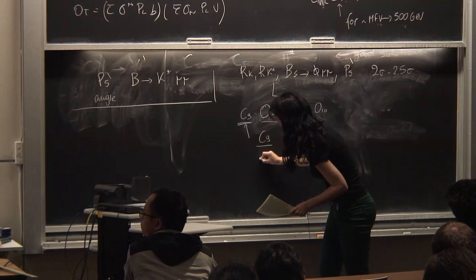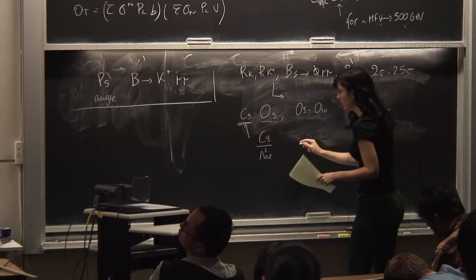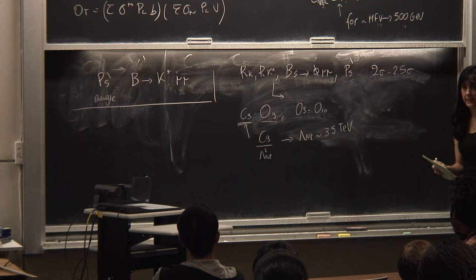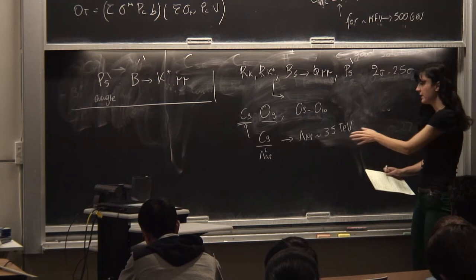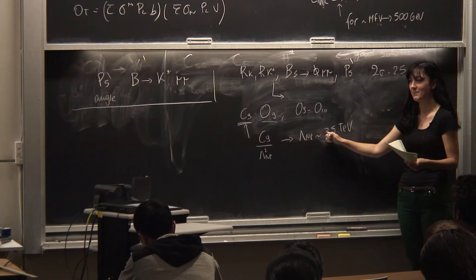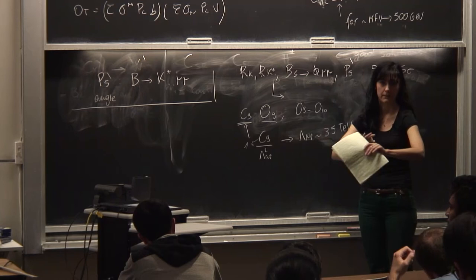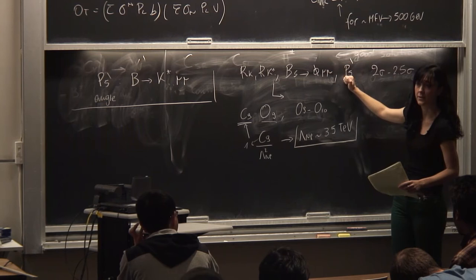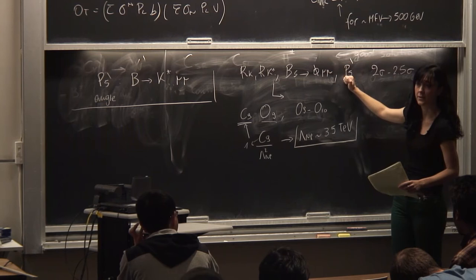You can write C9/Λ² to extract the number, and what you see is that this Λ_NP is something like 35 TeV. Compare this to RD and RD*, where we had something like 2 TeV. This is quite a bit heavier. But again, if you put this coefficient to one — just a tree-level flavor-changing neutral current — this is the scale hinted by all anomalies in B→sℓℓ transitions.